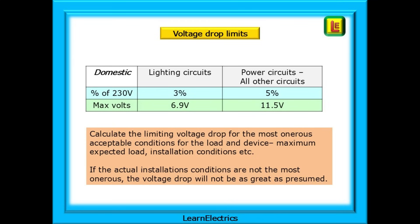We should calculate the limiting voltage drop for the most onerous acceptable conditions — the maximum expected load, installation conditions, etc. If on the day the actual installation conditions are not the worst that we calculated, the voltage drop will not be as great as presumed. We may have calculated for a 32-amp load when in fact the circuit is only using 20 amps, as an example.